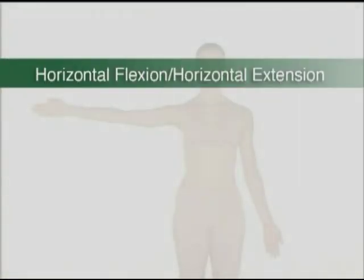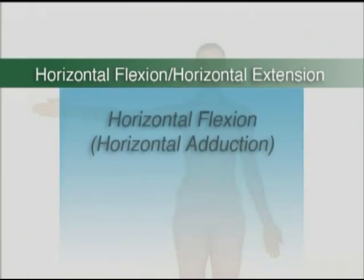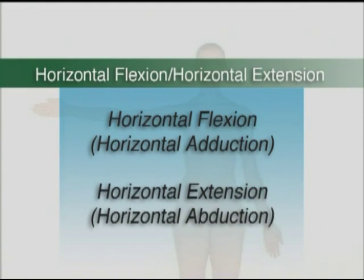The terms horizontal flexion and horizontal extension are special terms used to describe horizontal motions of the arm at the shoulder joint that are anterior and posterior in direction, with the arm first in a position of 90 degrees of abduction. These terms are useful to describe many motions that occur in sports. The term horizontal adduction is often used in place of horizontal flexion, and the term horizontal abduction is often used in place of horizontal extension.